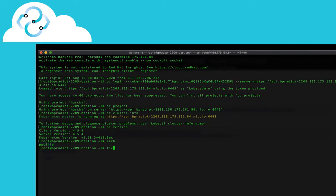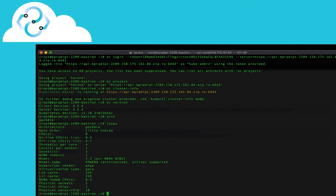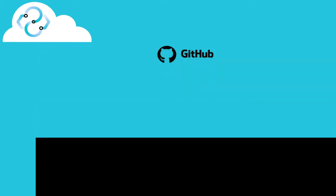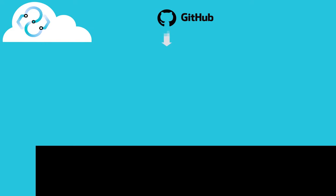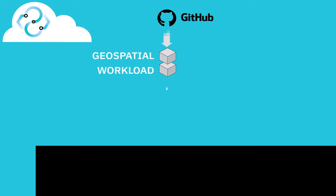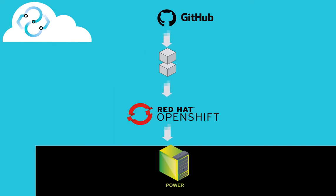Here we are now, logged into the bastion node. In this demo, we will deploy a two-tier application made up of Node.js and MongoDB, that is leveraged to deploy a geospatial workload on OpenShift Container Platform running on IBM Power Virtual Servers.